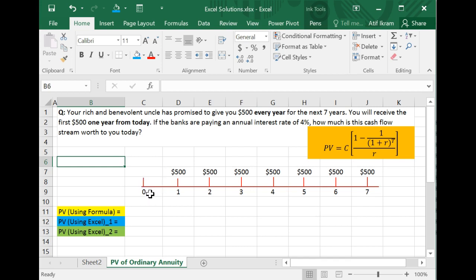And so it might be useful to see this on a timeline. Basically if this is today and these are the ends of year one, two to seven, then basically the annuity looks like this where you're going to get $500 every year for the next seven years. Now I'm going to show you a couple of ways in which you can do this.